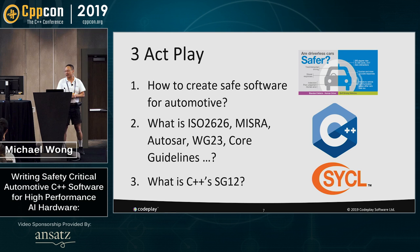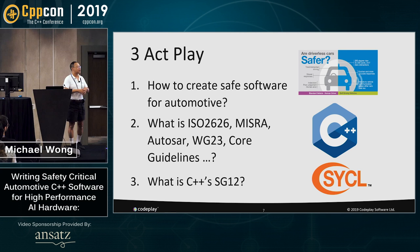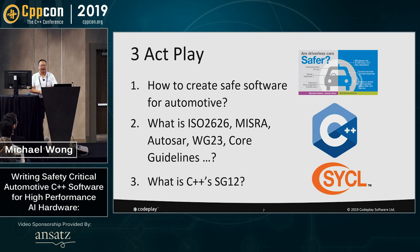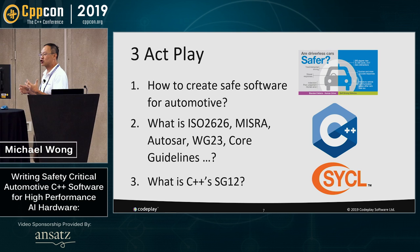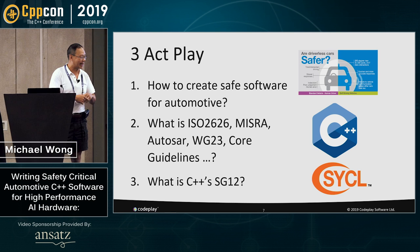This is really a three-act play on how to create safe software for automotive. When you talk about safety critical APIs, there's a whole gamut of them — almost too many. It took me almost three years to make sense of them. There's ISO 26262, there's MISRA, there's AutoSAR, there's WG23, and then there's Core Guidelines as well. I'm going to say a little bit about how each one of them works and how they work with each other.